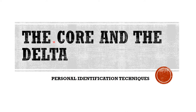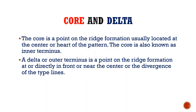Now that you know the rich characteristics, we are going to learn the core, the delta, and the rules or conditions in locating them. It is important to identify or locate the core and the delta because these are the focal points of fingerprint analysis. Once the fingerprint analyst or examiner takes hold of the fingerprint impression, he has to locate the core and the delta first before he could move to ridge counting, ridge tracing, or for any other purposes.